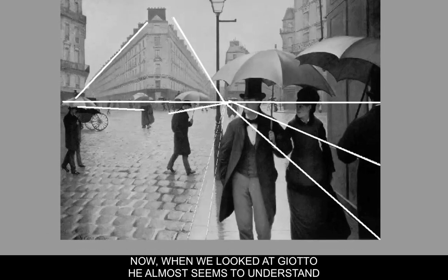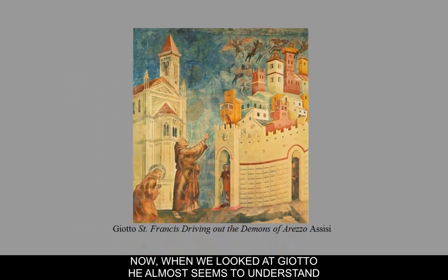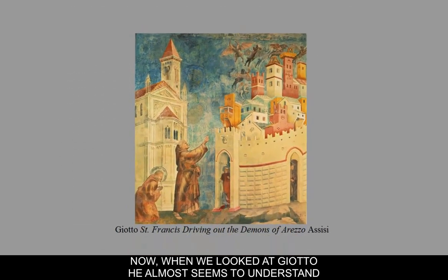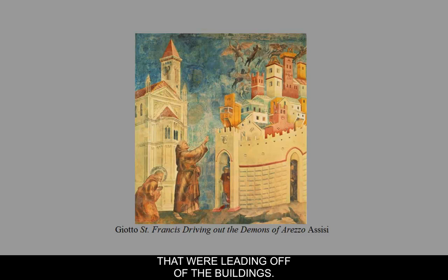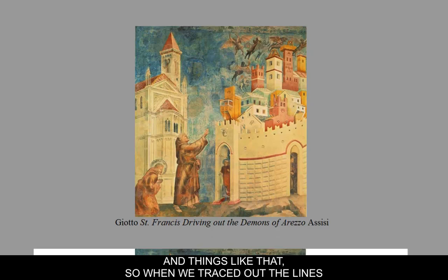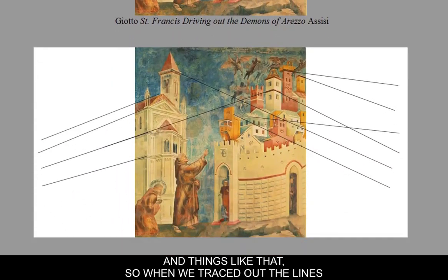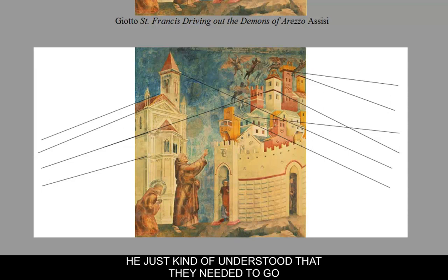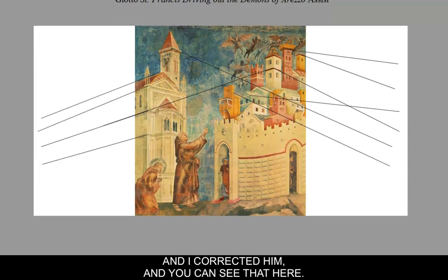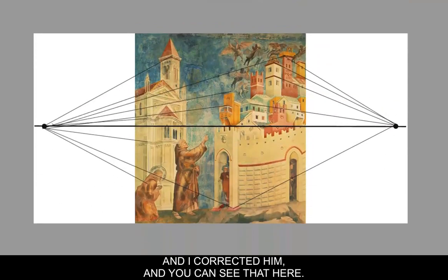When we looked at Giotto, he almost seems to understand two-point perspective. Looking at that fresco, we traced out lines leading off the buildings. When we traced them out, we saw that he didn't really quite understand where the horizon line or the vanishing points were — he just understood they needed to go in that general direction, and I corrected him.